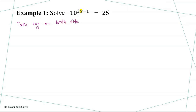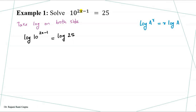When I say log, I mean log to the base 10. So when we take log on both sides, we get: log of 10 to the power of (2x minus 1) is equal to log of 25. Here we use the rule that log of a to the power r is the same as r times log of a. So 2x minus 1 comes down as multiplication, giving us: (2x minus 1) times log of 10 equals log of 25.